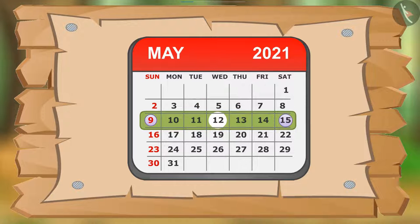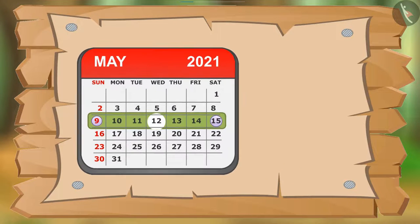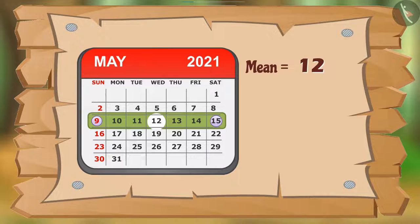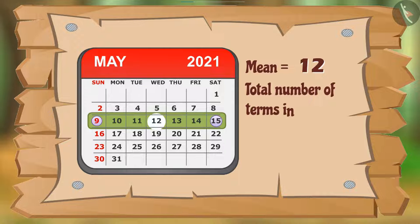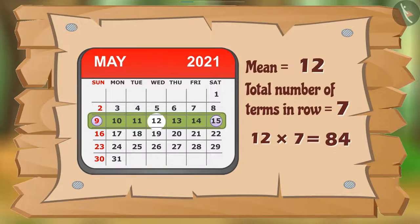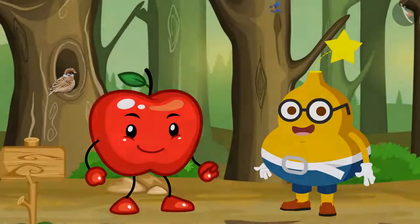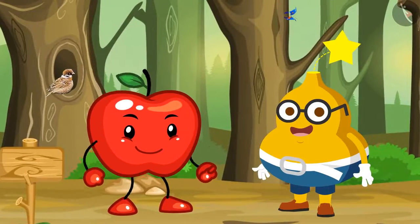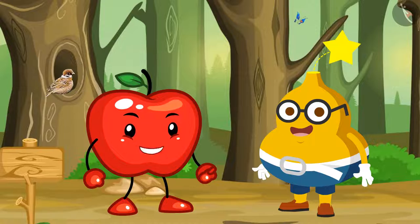12 is the middle number of the row, hence the mean of the row is 12. So I multiplied 12 by the total number of terms in the row, that is 7, and I got the answer 84. Appie says: Excellent!